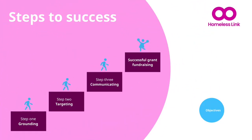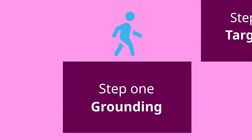Throughout this series of learning, you have built your understanding of how to be more successful in grant fundraising and the steps needed. The first step is grounding your grant fundraising in your charitable purpose, making sure that it is helping you deliver your strategy, supporting your delivery model and the impact you want to have, and meeting your funding need to do this. This was covered in Module 1.